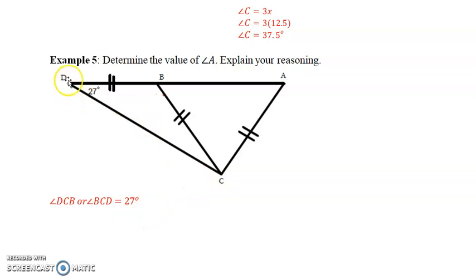So that means angle DCB or BCD equals 27 degrees because it's an isosceles triangle. So angle DBC or CBD would equal 180 minus 27 degrees minus 27 degrees, which would equal 126 degrees.